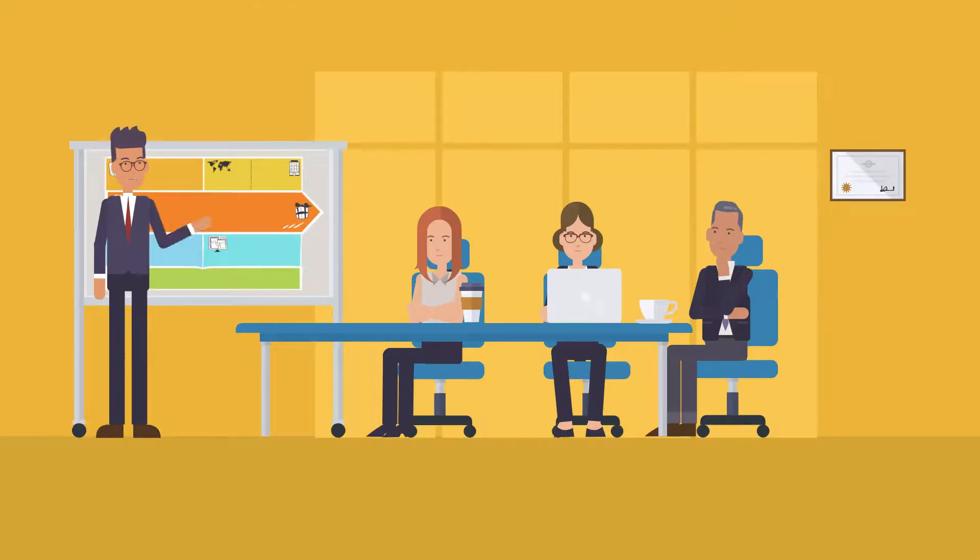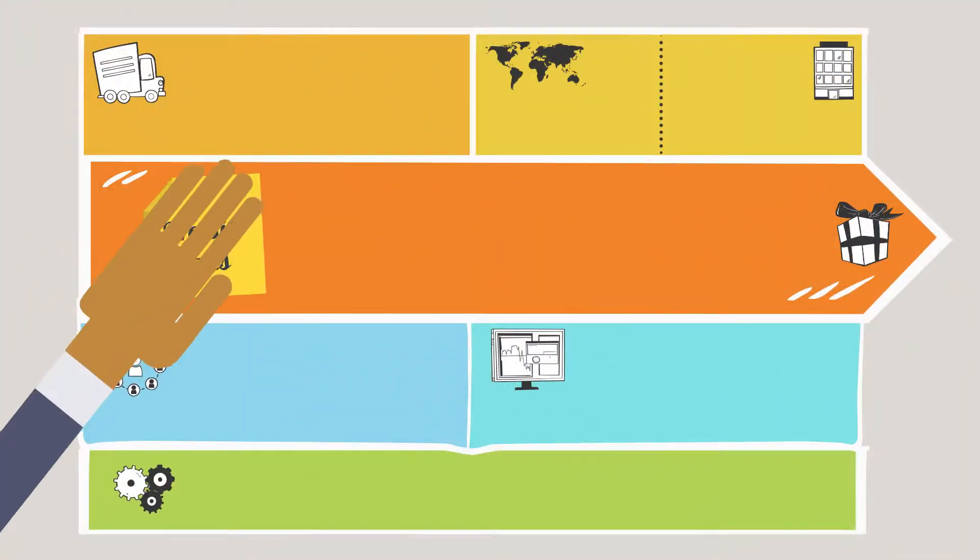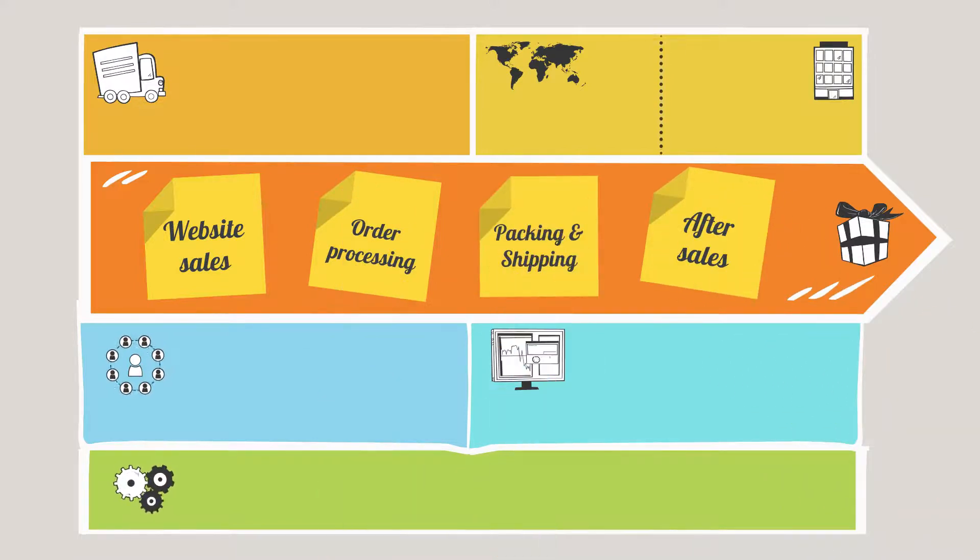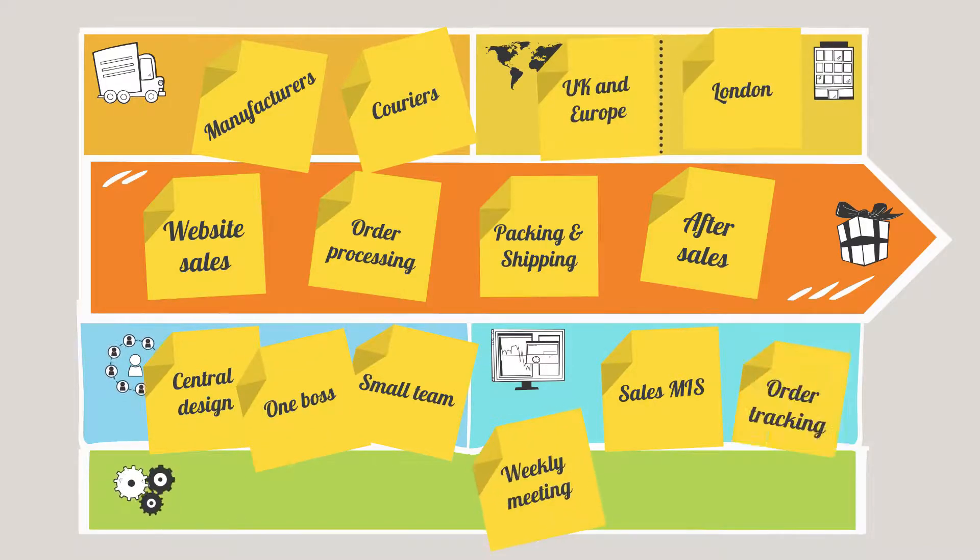Typically, you would work on creating the operating model canvas by bringing together managers or people from each function within the organization and asking them to share their thoughts and ideas about the organization, using the six elements of the canvas to focus the discussion. By collaborating with others, we're able to produce a well-rounded view of how the organization operates.